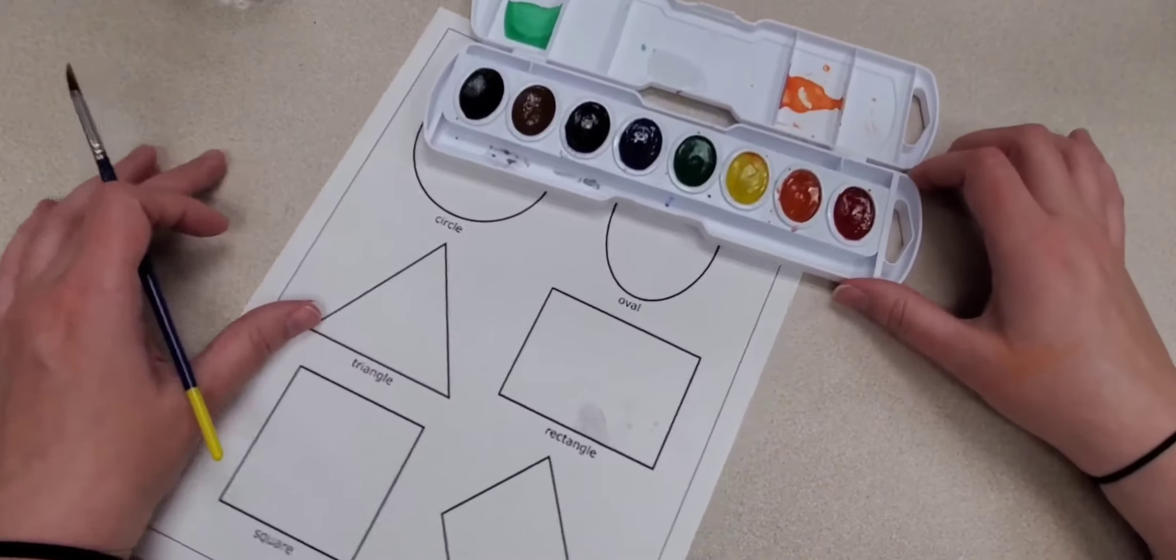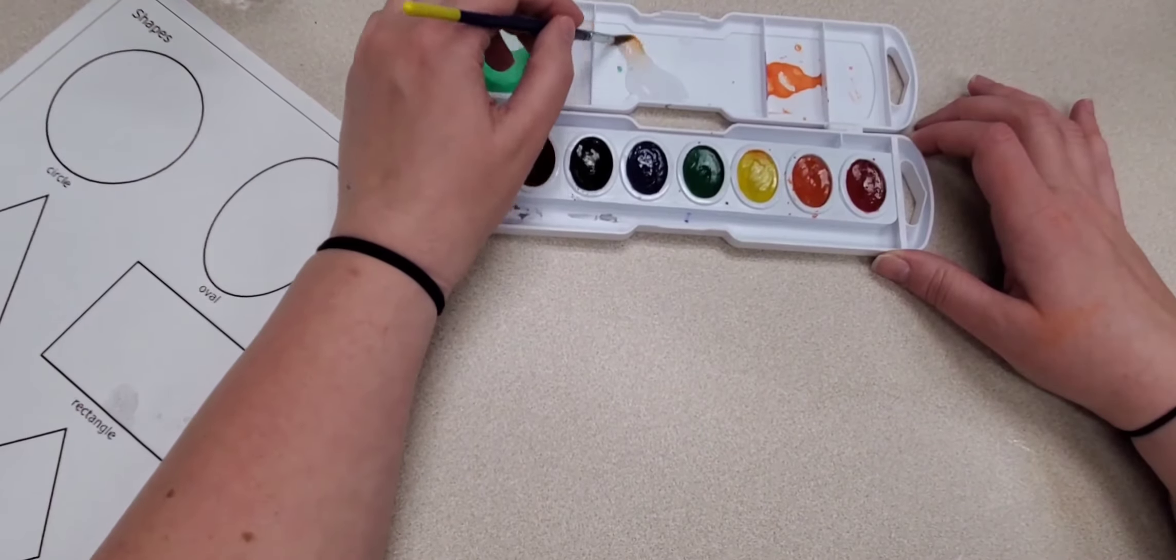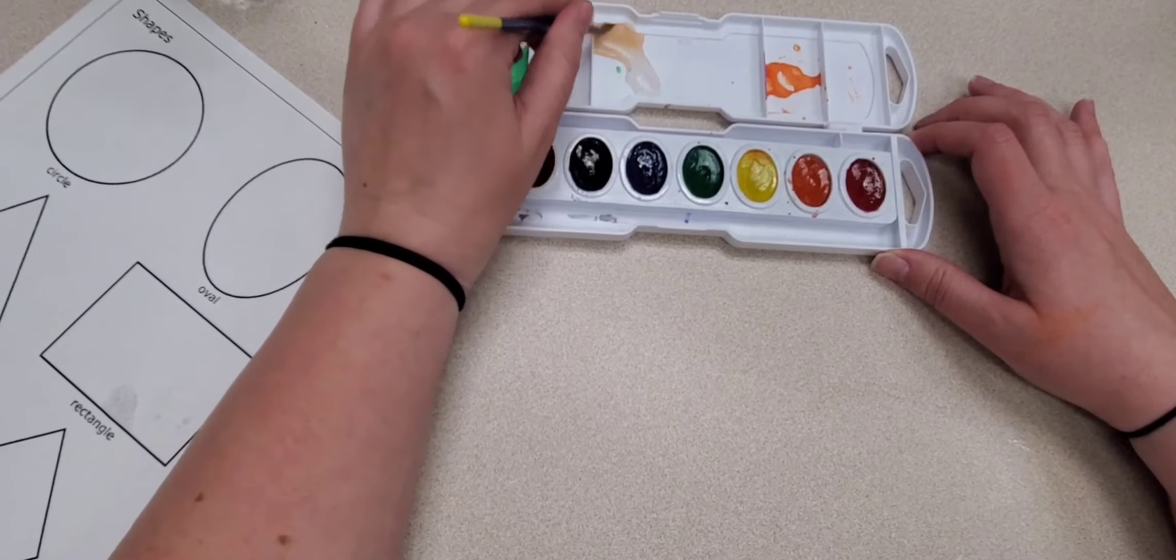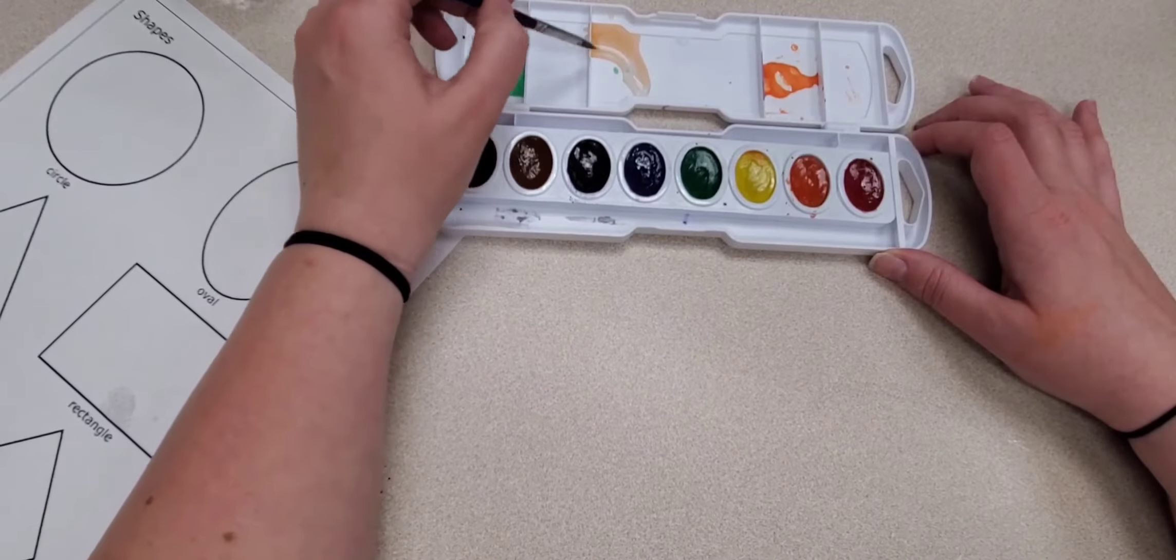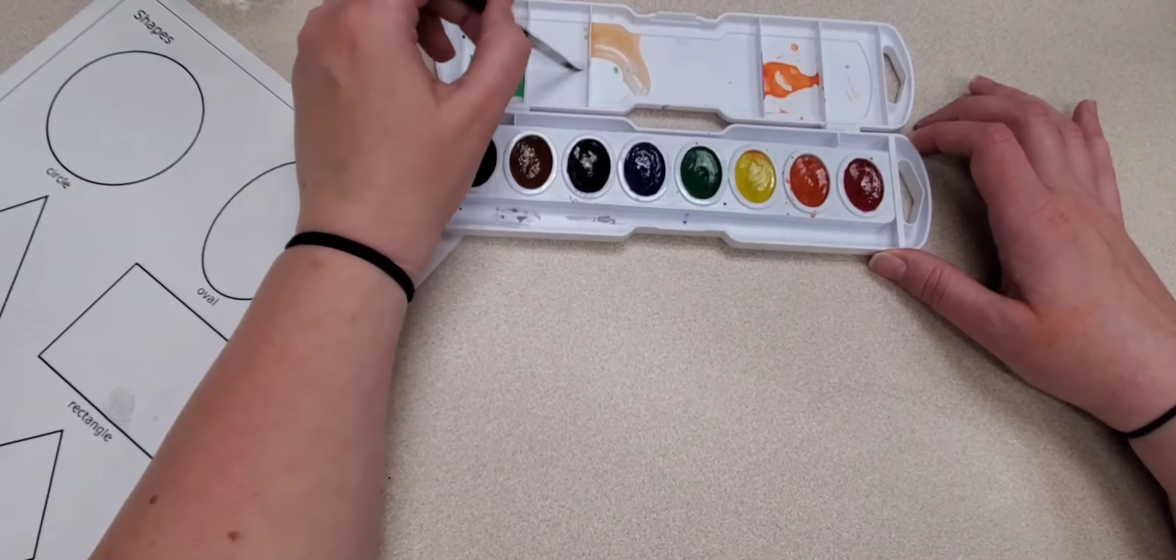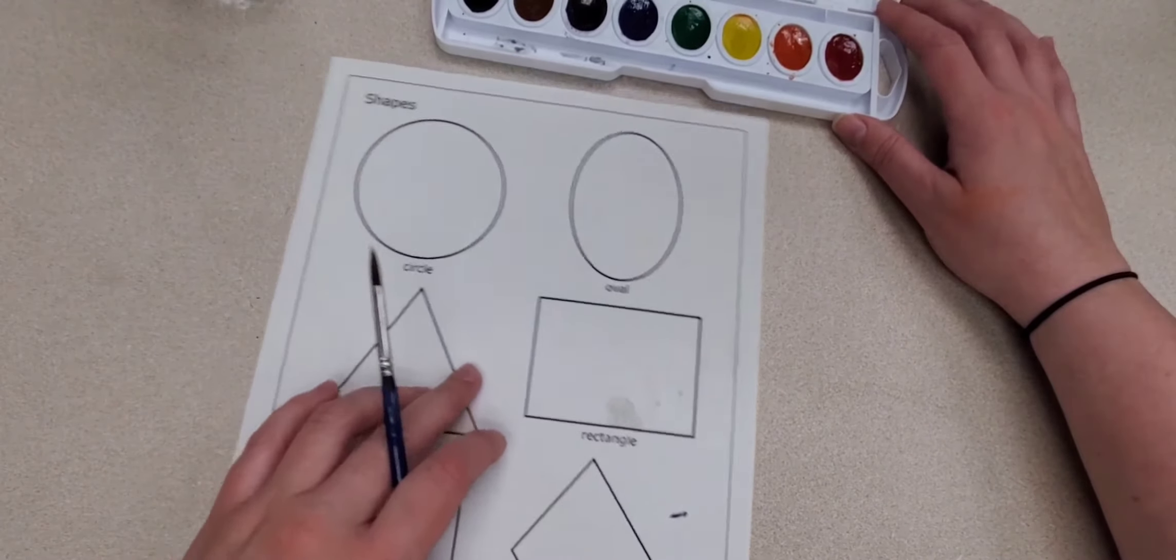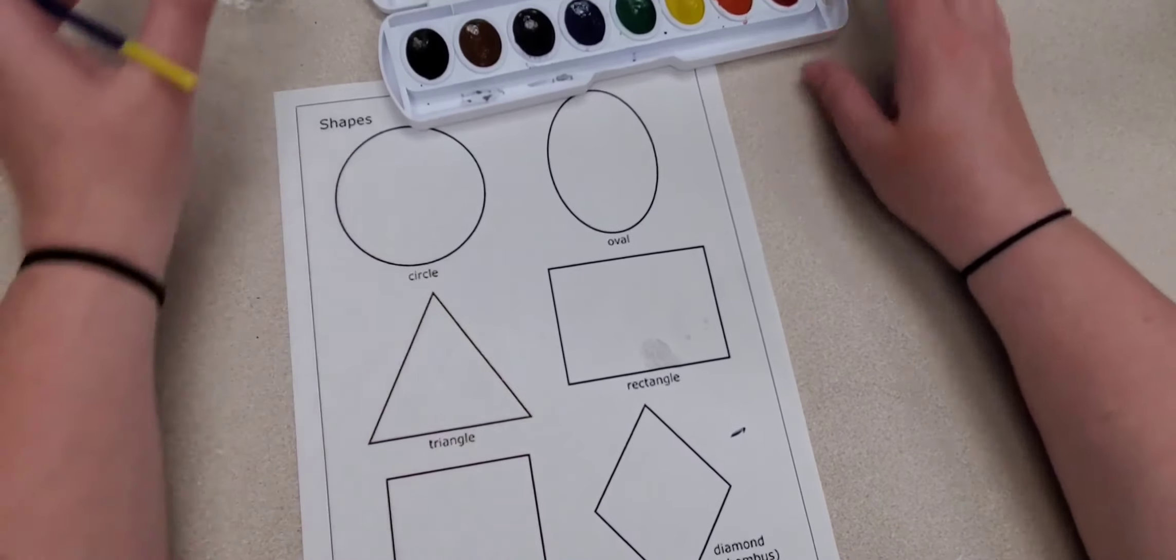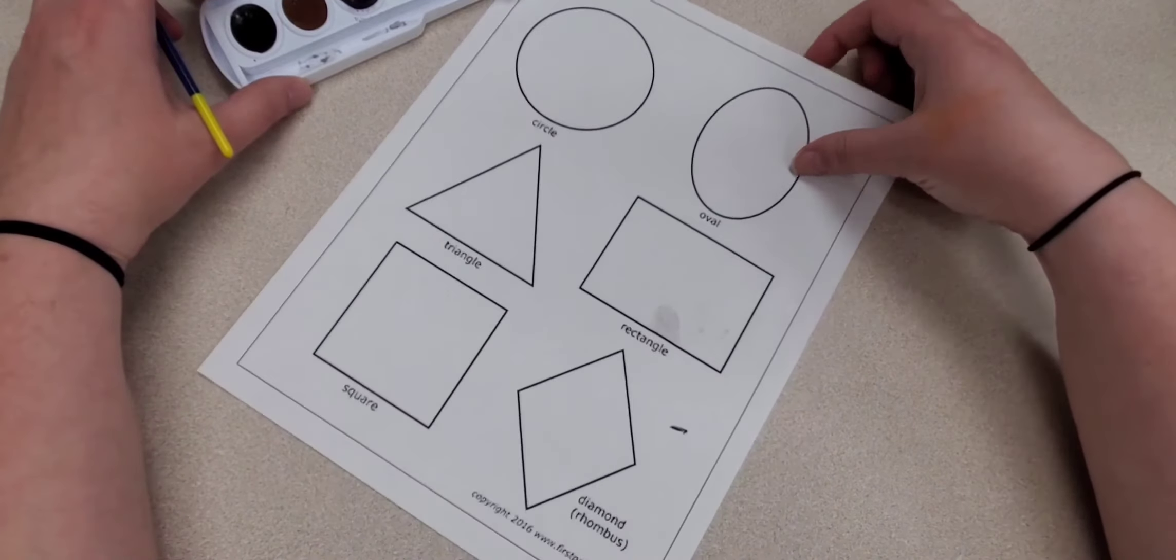Alright, so for today's example I'm going to go ahead and just use your basic simple colors that you can buy pretty much anywhere. This one I got online but it has your basic reds, oranges, yellows, greens, blues, purples, browns, and blacks. And I'm going to be showing you guys a couple different techniques that you can do in order to try out watercolor.